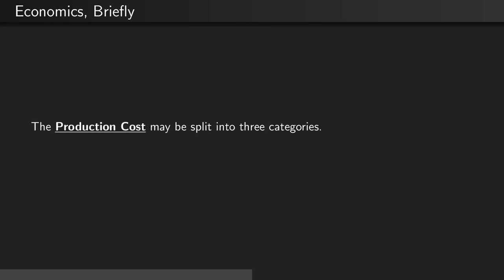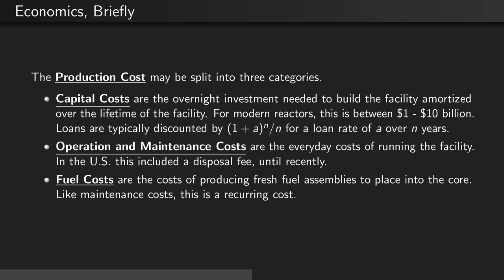The production cost of nuclear power may be split into three categories. Capital costs are the overnight investment needed to build the facility, amortized over the lifetime of the facility. For modern reactors, this is between one and ten billion dollars. Loans are typically discounted through the normal discounting equation.